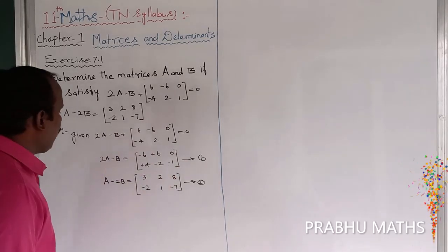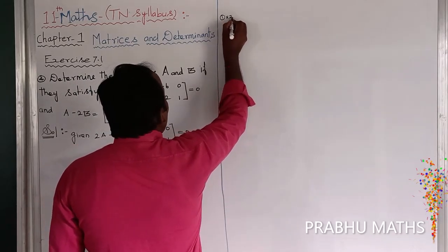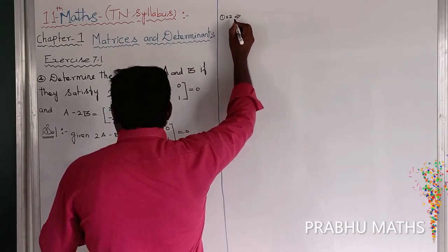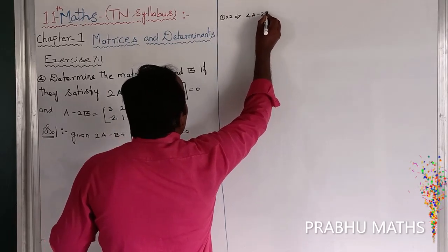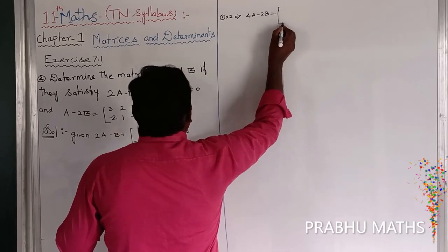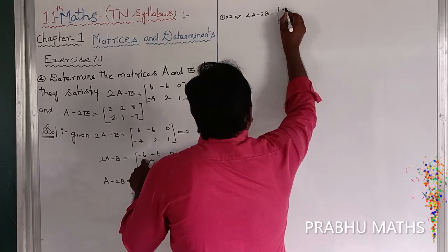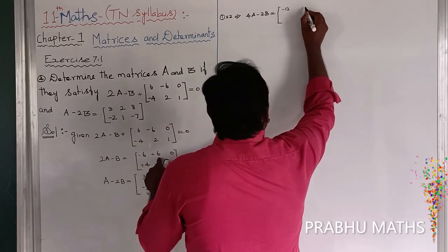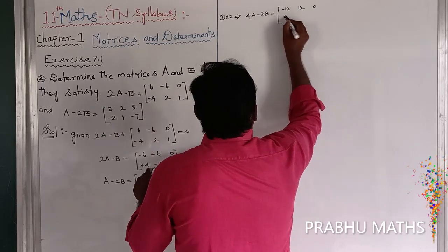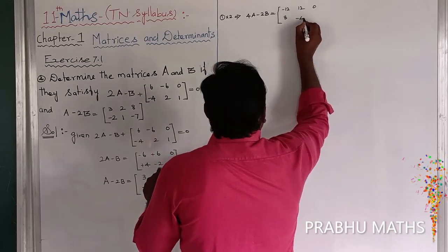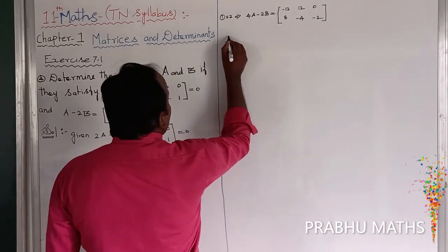Equation number 1 multiplied by 2, which implies that 4A minus 2B is equal to: minus 16, minus 6, so multiply gives minus 12, next one plus 12, next one 0, next one 8, 2 sub minus 4, next 2, 1 sub minus 2. So multiply by 2.